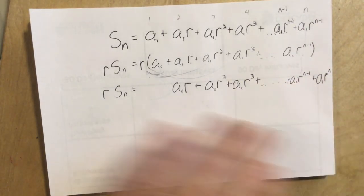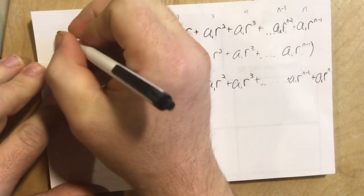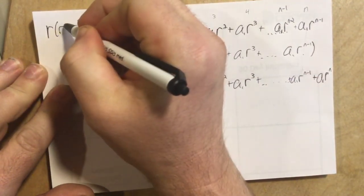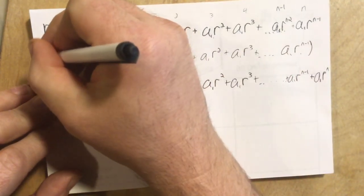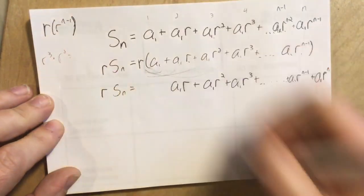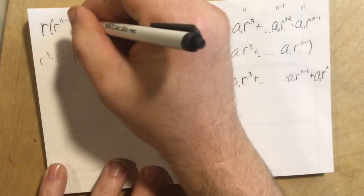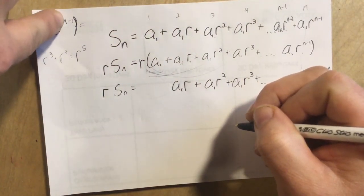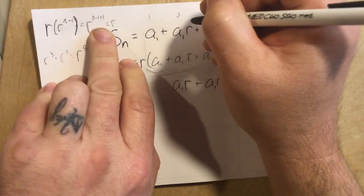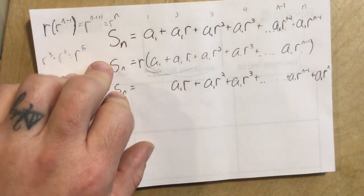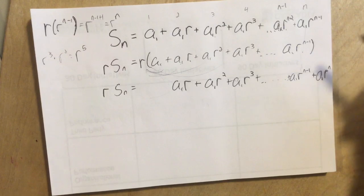If you're confused about how multiplying r to the n minus 1 by r gives r to the n — remember that when we multiply powers of the same base, we add the exponents. For example, r cubed times r squared is r to the 3 plus 2, which is r to the fifth. So r times r to the n minus 1 is r to the 1 plus n minus 1, which simplifies to r to the n.